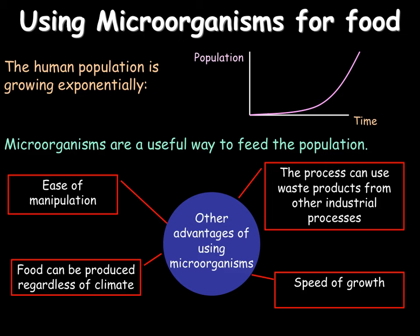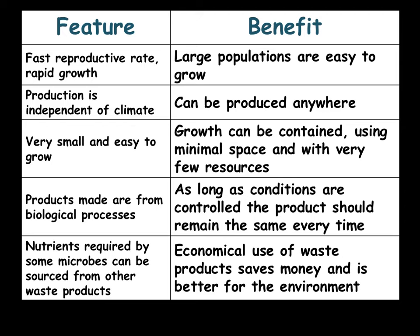Microorganisms also grow very quickly, which is useful for producing a lot of food in a short time. To summarise, the advantages are: fast reproductive rate and rapid growth so large populations are easy to grow; climate-independent production so food can be produced anywhere; they're small and easy to grow, not requiring much space or resources; waste products can be used as feedstock to save money; and because it's a biological process with controlled conditions, the product remains consistent every time. All of these features mean microorganisms are often cheaper to use than other methods.